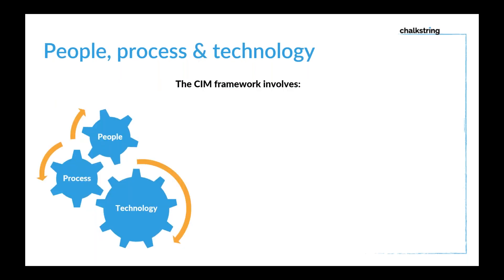Very often people think that CIM is just a piece of software — I'm going to buy a bit of software and I've bought CIM. That's not strictly true. It's actually three things: people, processes, and technology. Those three things together enable you to leverage CIM. The people are very important — not just to plan what you want to do, but also to control it. The management team and stakeholders within the project team are key to this.